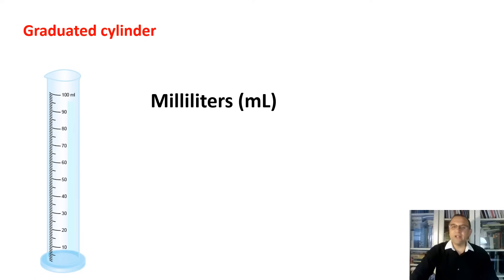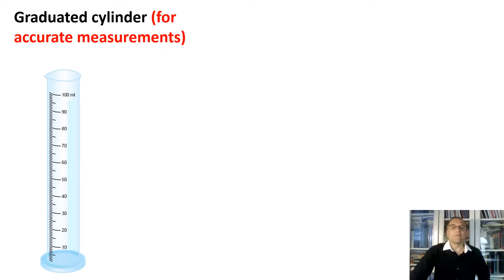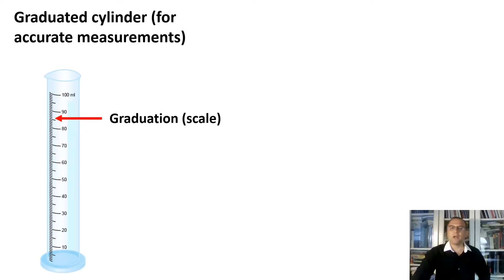To measure milliliters, we use graduated cylinders. Graduated cylinders have a narrow cylindrical shape and are used in the laboratory for accurate, precise measurements of liquids. Each marked line represents the amount of liquid measured. A traditional graduated cylinder is usually narrow and tall to increase accuracy and precision. The maximum this specific graduated cylinder can measure is 100 milliliters.